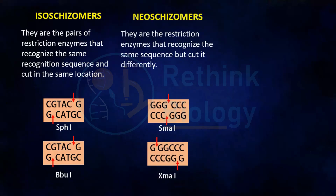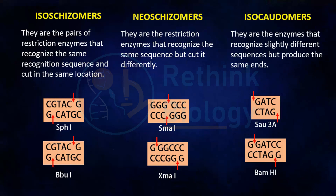Neoschizomers are restriction enzymes that recognize the same sequence but cut it differently. An example is SmaI and XmaI. Isochordomers are enzymes that recognize different sequences but produce the same ends. For example, Sau3A and BamHI both give a 5'-GATC-3' sticky end.